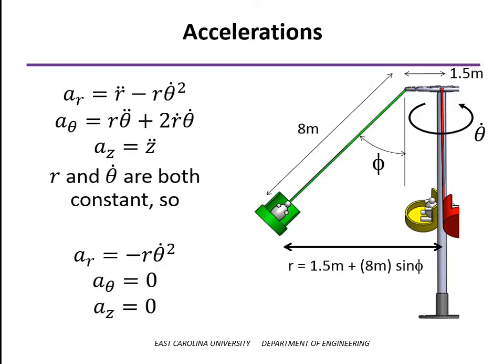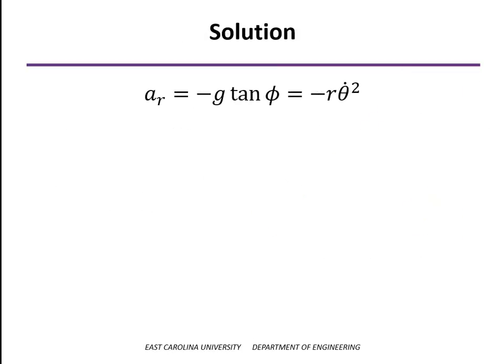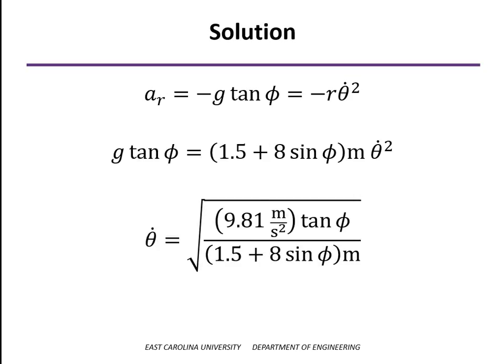So we can set this equal to the acceleration that we found earlier from the equations of motion. And we can solve this for the angular speed theta dot. And so putting in the value of the radius here, there's our final solution. Theta dot is the square root of this expression that involves the gravitational constant g, as well as the tangent and the sine of the angle phi.